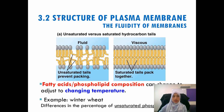Looking at this figure comparing unsaturated versus saturated hydrocarbon tails: the kink visible in the unsaturated tail prevents tight packing and keeps the membrane fluid. In contrast, the saturated tail is straight, allowing tight packing. That is the key difference between unsaturated and saturated fatty acids in the membrane.